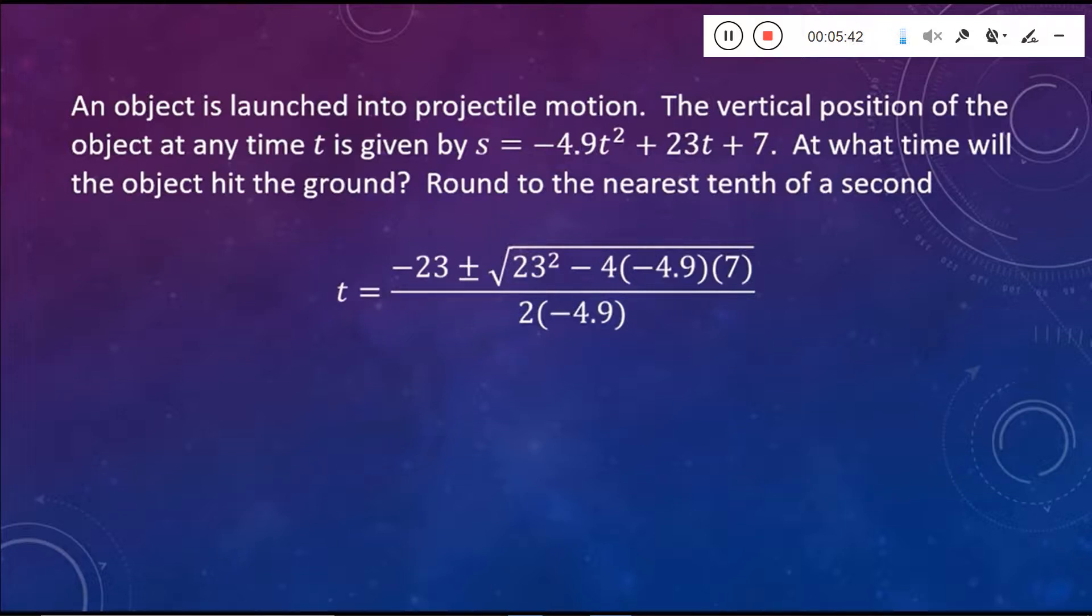Note that what's underneath our square root, our discriminant is going to be positive. And when you do that calculation in there, you get 666.2. Oh boy, not a good number. So we have negative 23 plus or minus the square root of 666.2 over negative 9.8.